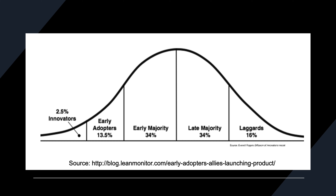Starting out, we're looking at the diffusion of innovation model. I believe it was coined in the mid to late 1900s. There are a few sections in here that you need to note: the first being the innovators, second, early adopters, third, early majority, late majority, and laggards.